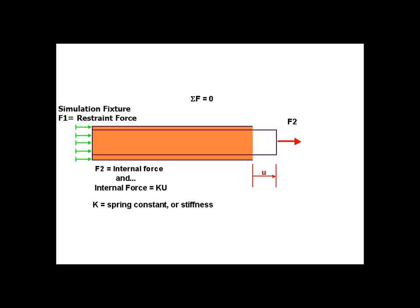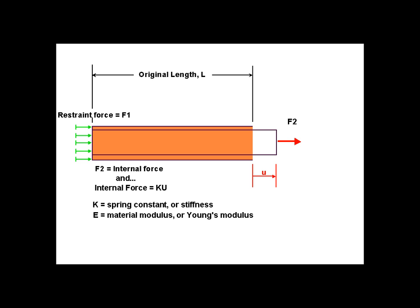The spring constant K is also called the stiffness of the structure, and it comes from the material modulus denoted as E, also known as Young's modulus. The original length of the section, L, and the original undeformed cross-sectional area of the section, A. For the case of this bar, the spring constant is the area times material modulus divided by the original length.